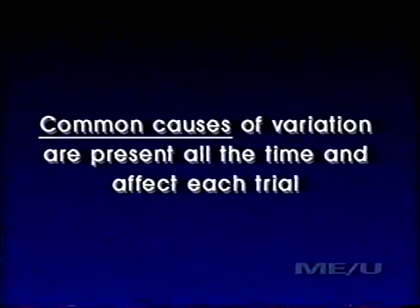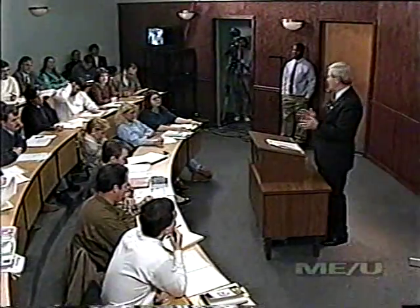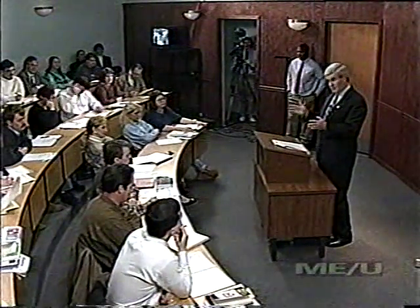Common causes of variation are present all the time and affect every trial. If you try to drive into Atlanta between 8 and 9 every morning during the week, you will have a similar experience — it's called a traffic jam. That's a common cause. Similarly, if you arrive at the 24-hour grocery store early enough each morning, you'll get there before the newspapers are delivered and be frustrated. The correct answer is not to arrive at 5 and wait patiently until the papers arrive at 6 — the answer is to figure out what time the papers arrive.